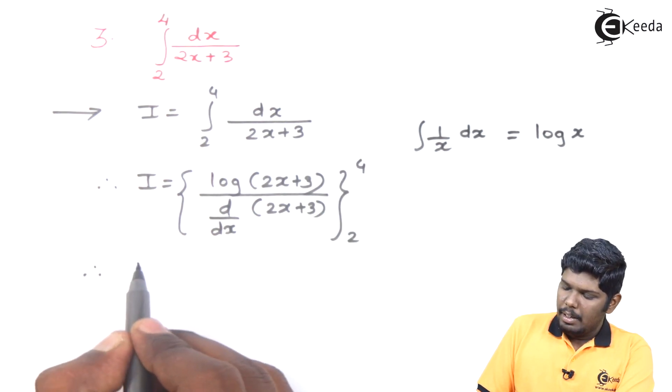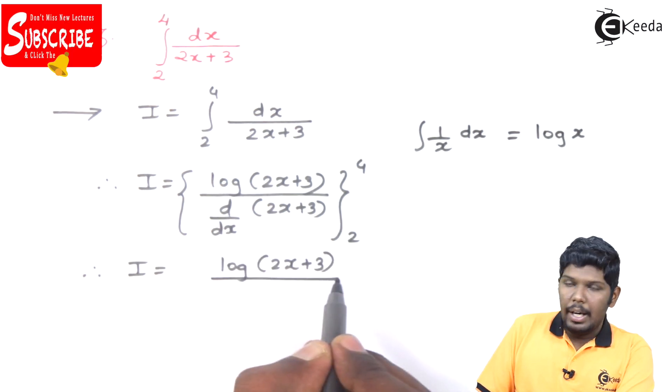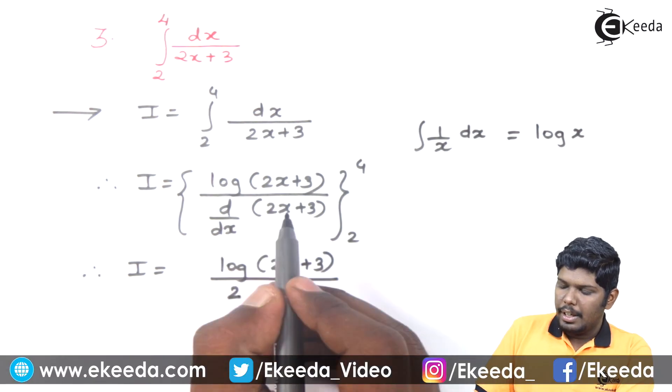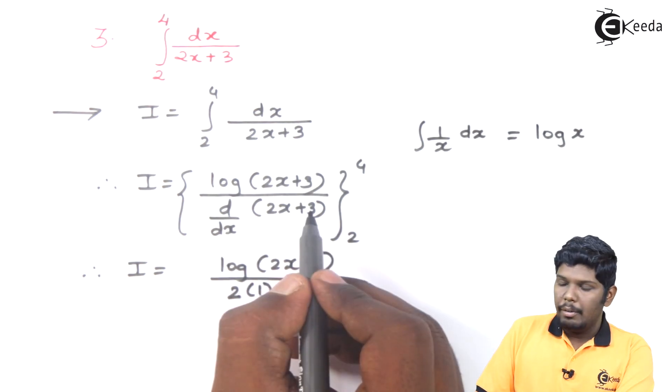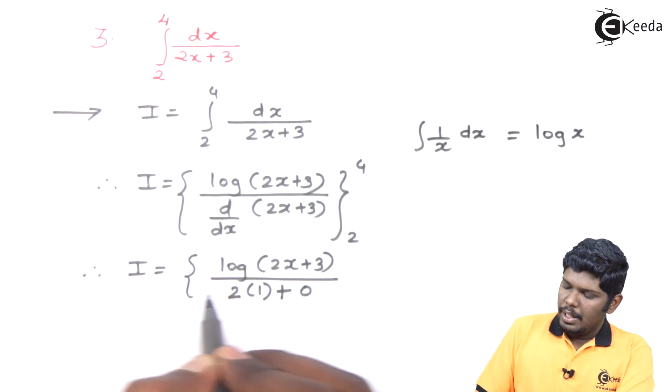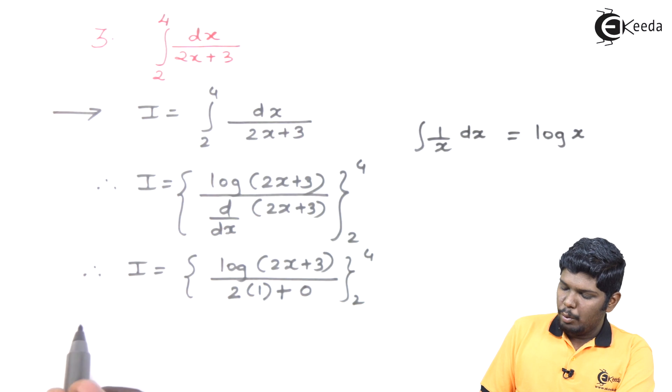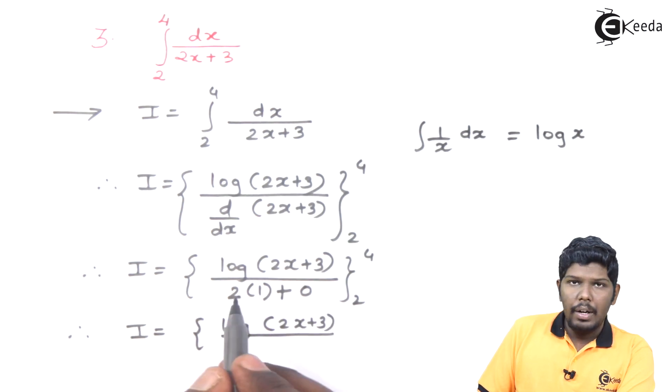In the next step, I will be log of 2x plus 3 divided by, here you can see, 2 is a constant. Derivative of x will be 1 plus derivative of 3, a constant whose derivative will be 0.